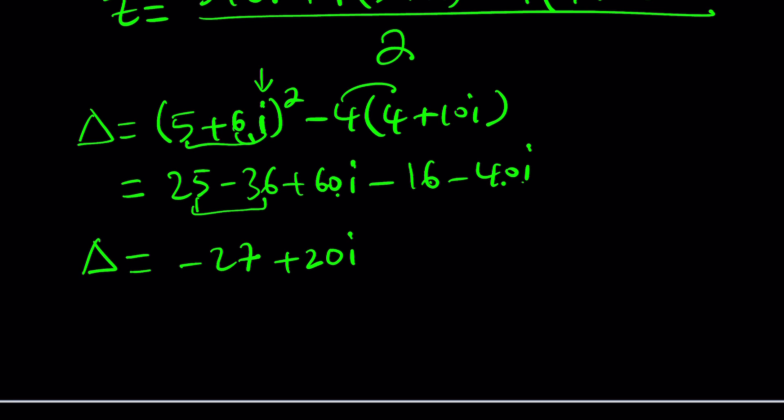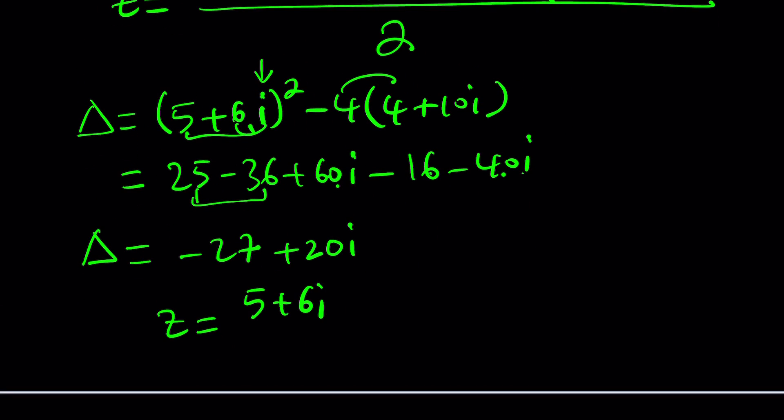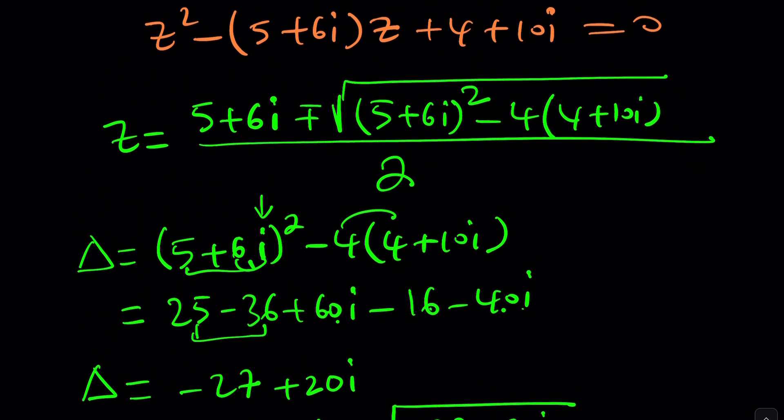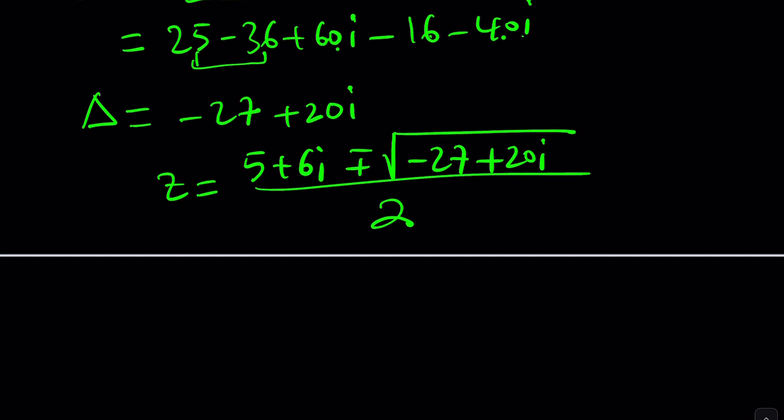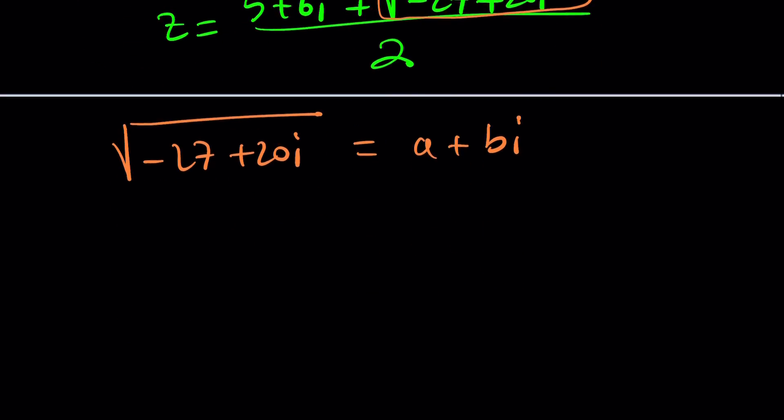Let's go ahead and square this using the rule again. i squared is negative 1. So this is going to be 25. If you square this, you're going to get minus 36 because i squared is negative 1 again. If you multiply these two things and double the product, you're going to get 60i. Minus 16 minus 40i. Let's simplify this. I get a negative 11 from here and that's a negative 27. 60 minus 40 is 20. So that is plus 20i. So now z is going to look like this. 5 plus 6i plus minus the square root of negative 27 plus 20i, which is the discriminant, and divided by 2.